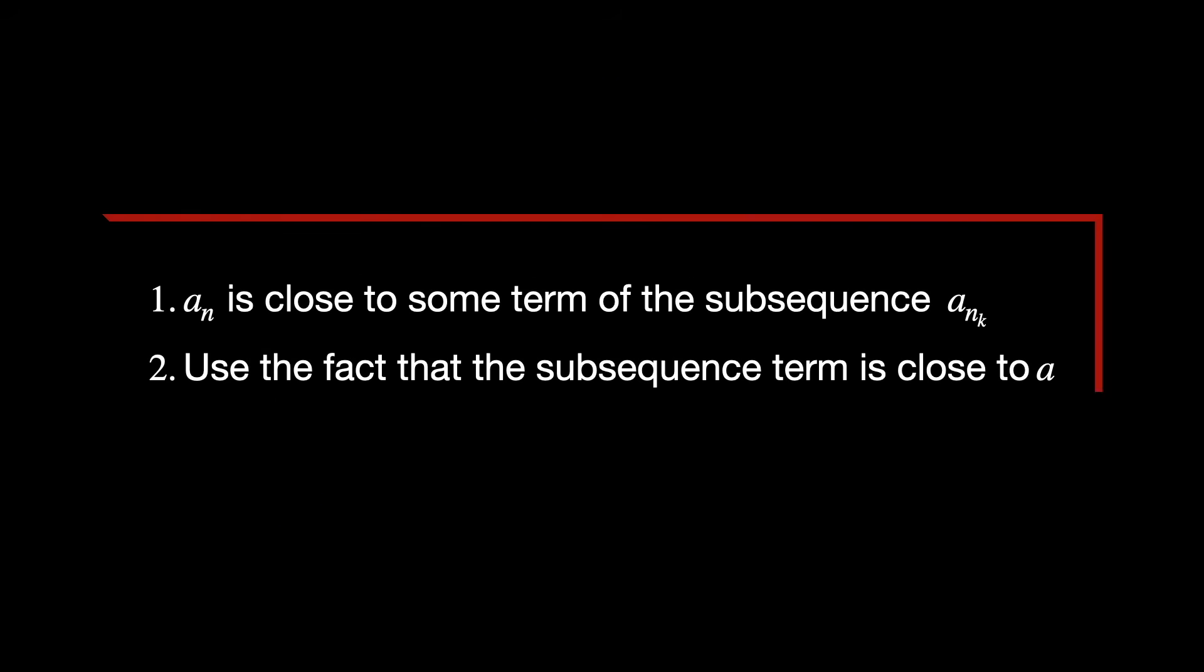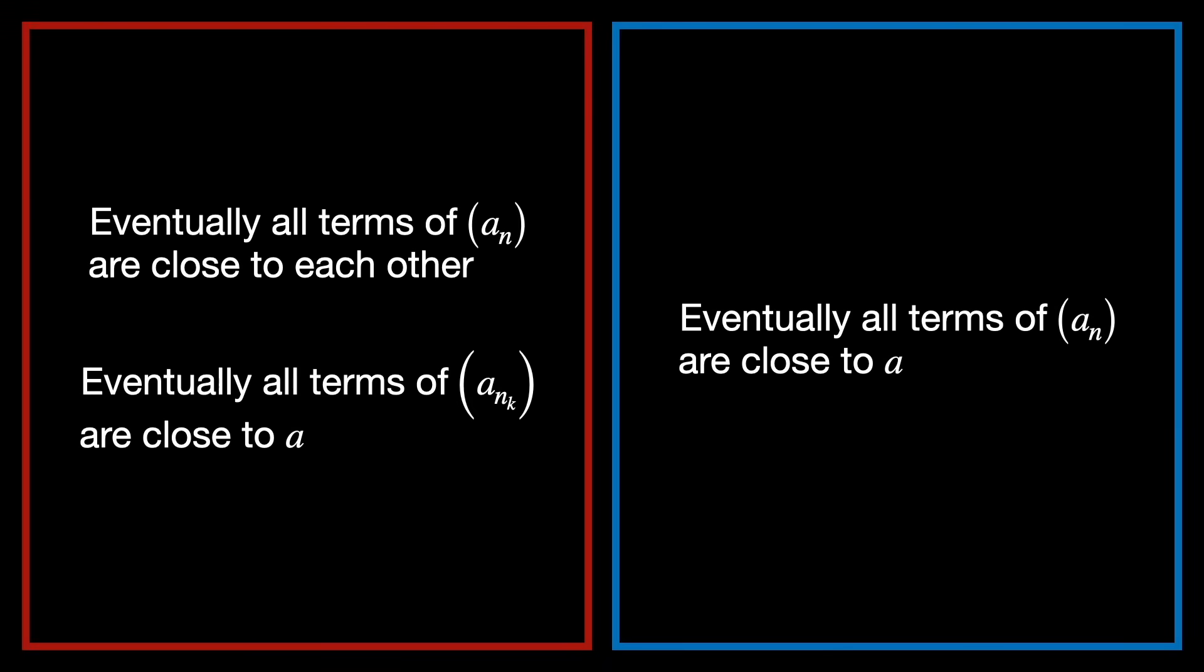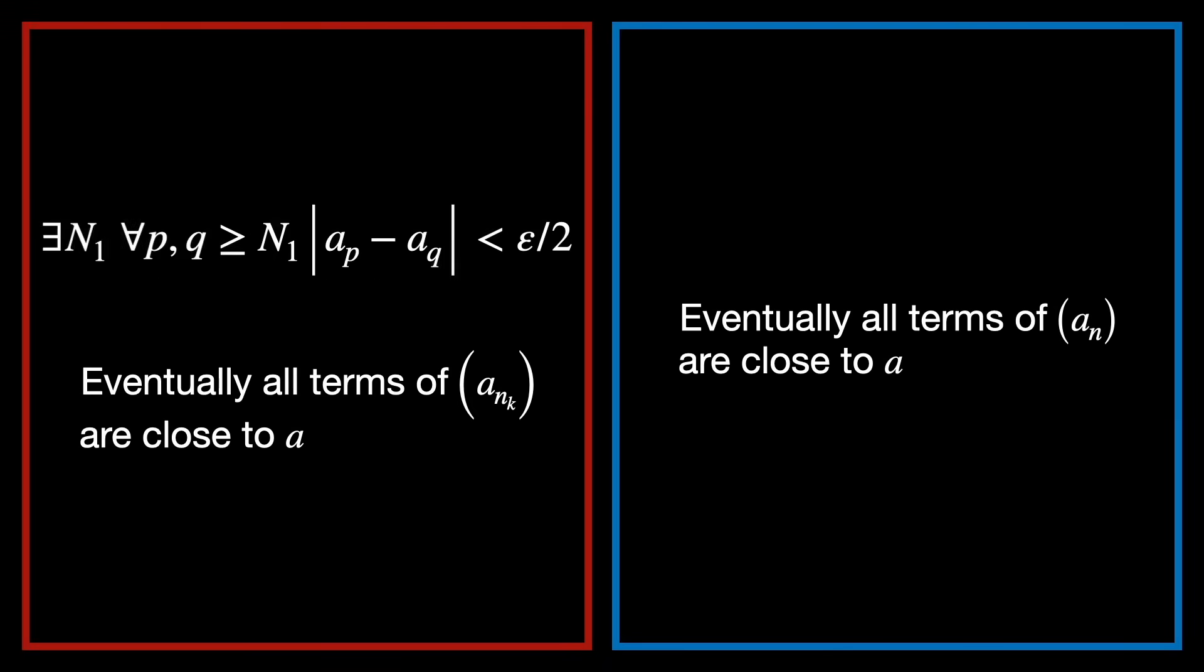If both are within epsilon over 2, then by the triangle inequality, this is true. So let's apply the two main hypotheses with epsilon over 2 and see what we get.